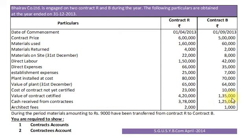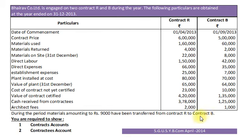Value of Contract Certified, this is nothing but Certified Work, will be recorded in Contract Account on Credit side under Work in Progress. Cash received from Contracts will be recorded as Bank Account Debit to Contract Tees Account — Contract T Account Credit side Rs. 1,25,000 by Bank. Architect Fees Rs. 1,000 will be recorded in Contract Account on Debit side. Material Rs. 9,000 transferred from Contract R to Contract B: entry is Contract B's Account Debit to Contract R Account Rs. 9,000.